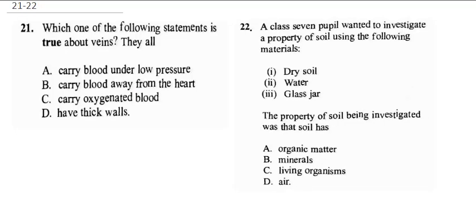Question 21 asks what is true about veins. Veins carry deoxygenated blood from all parts of the body to the heart. It is arteries, not veins, that carry blood away from the heart and carry oxygenated blood. Veins do not have thick walls. The correct statement is that veins carry blood under low pressure, because the blood returning from other parts of the body does not contain oxygen. So the correct answer is A.